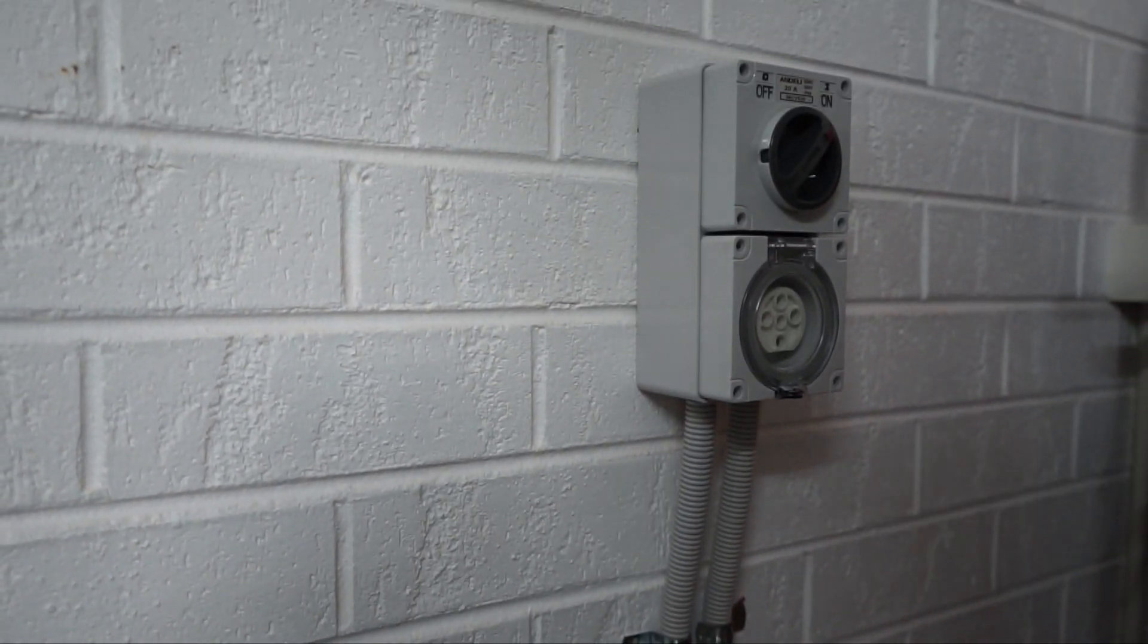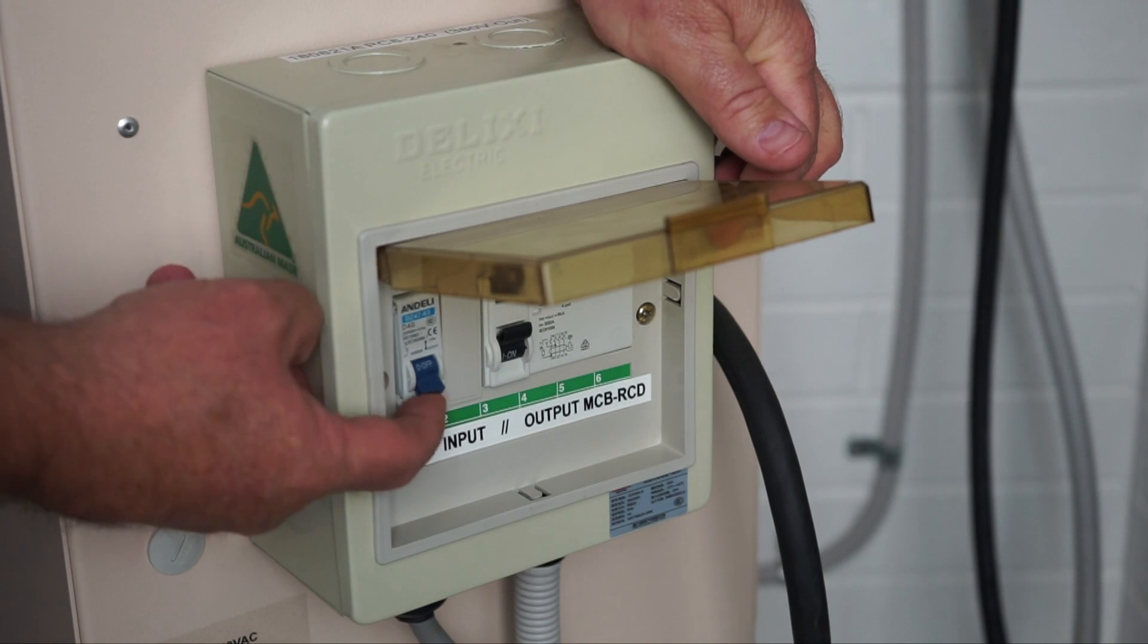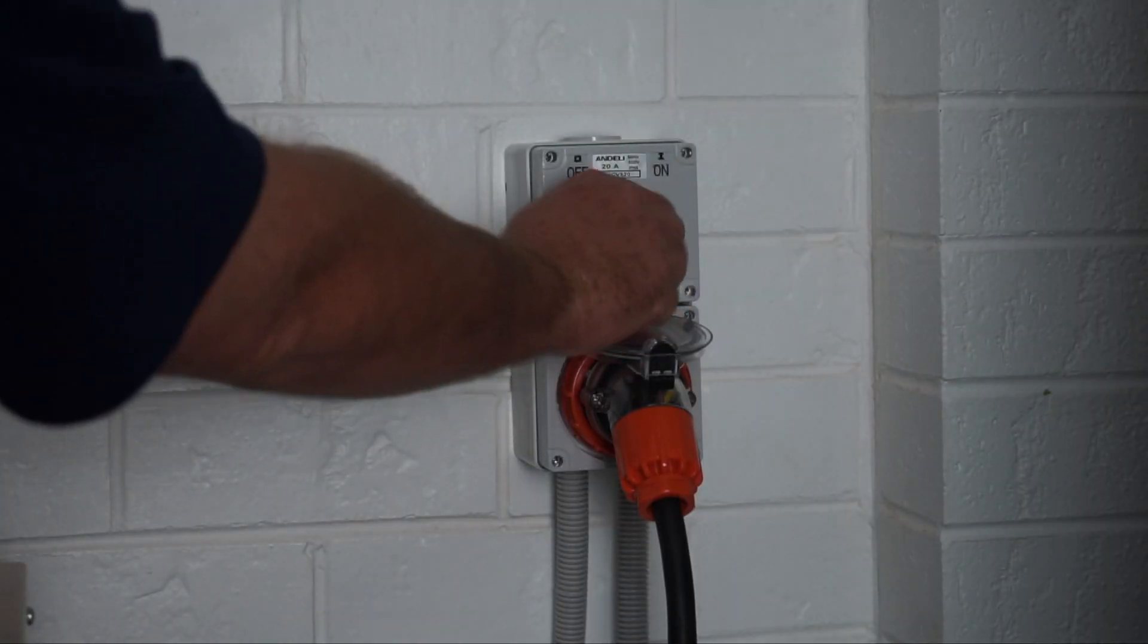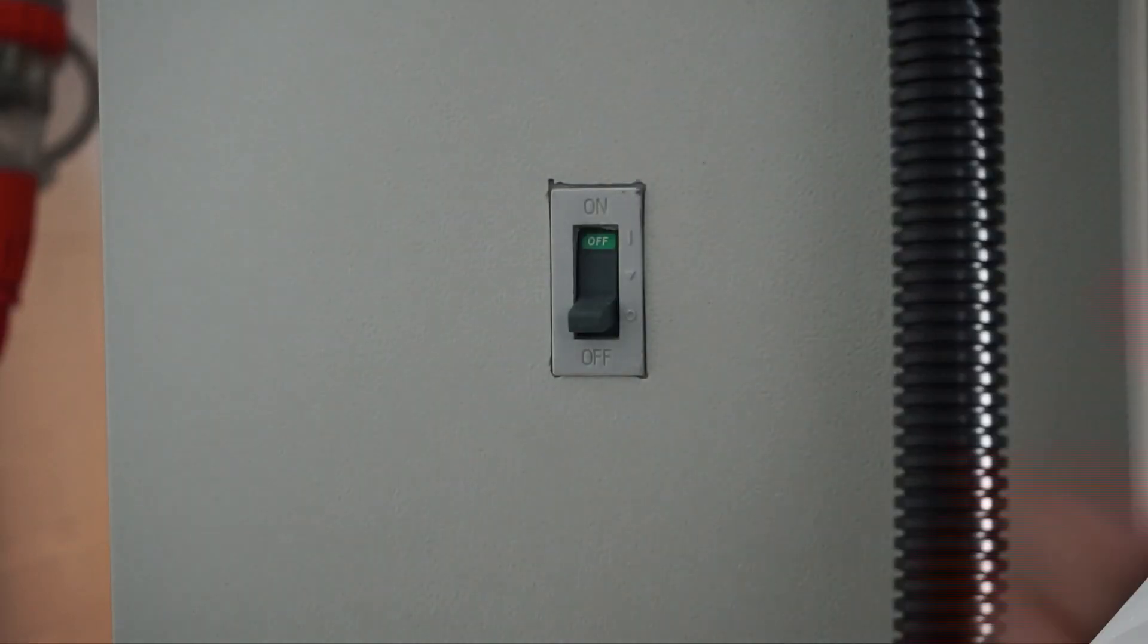Now all that's out of the way, it's time to turn it on and show it off to you the viewers. The first thing to do is turn on the phase changer and wait for it to go online. The first main switch is turned on followed by the CNC machine breaker.